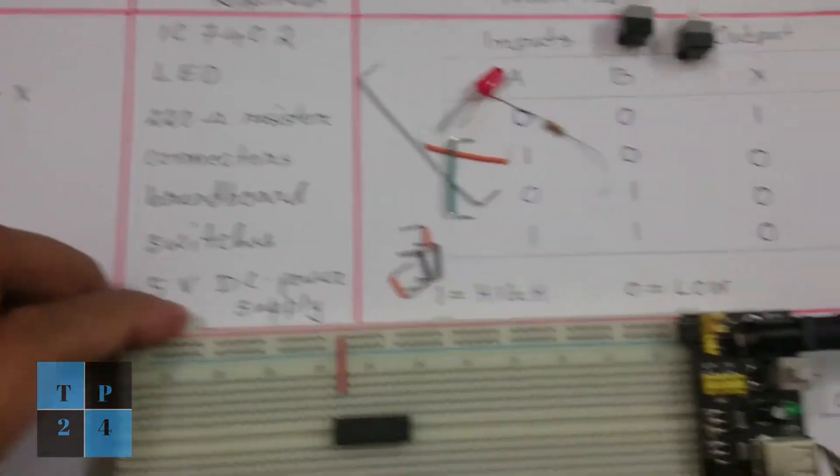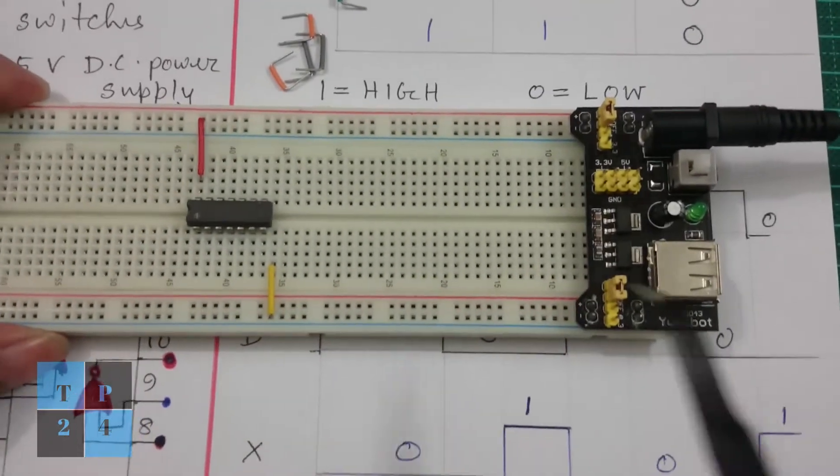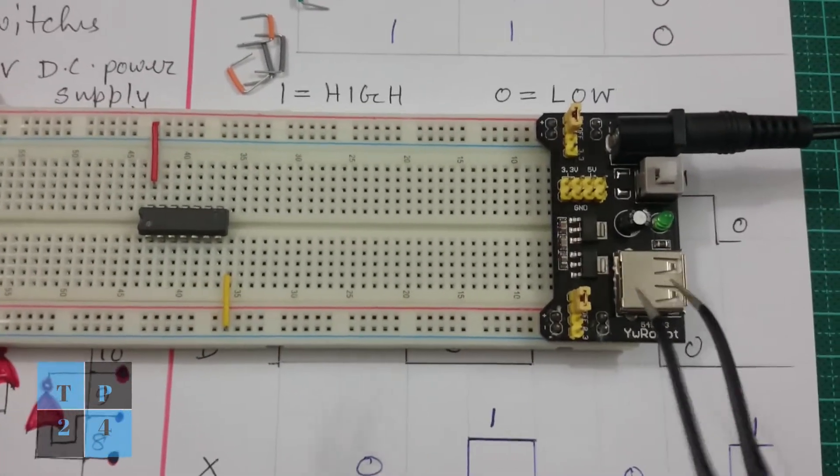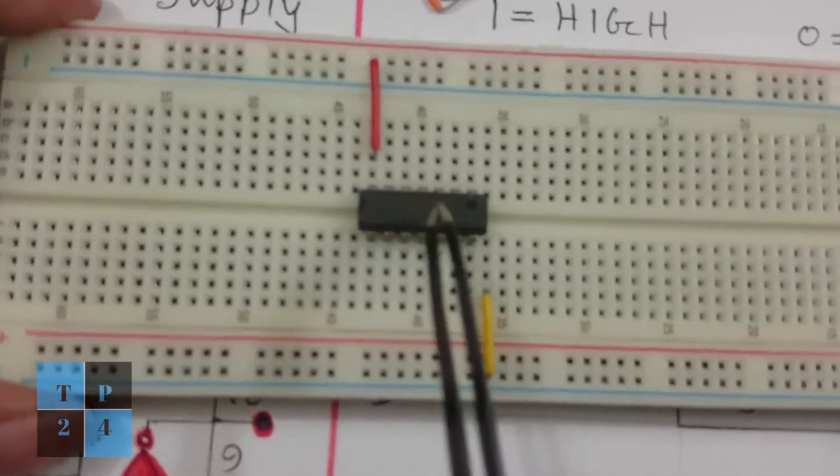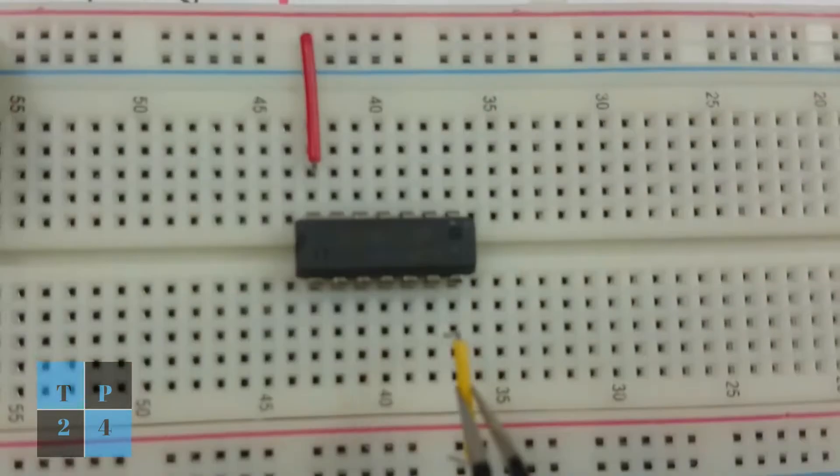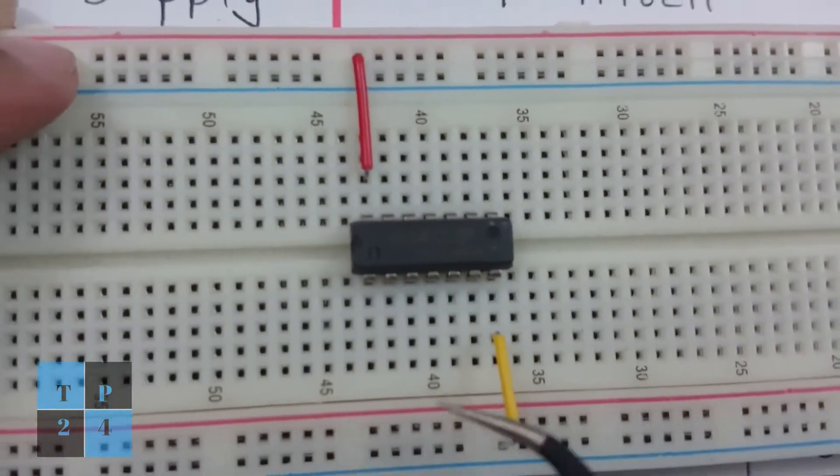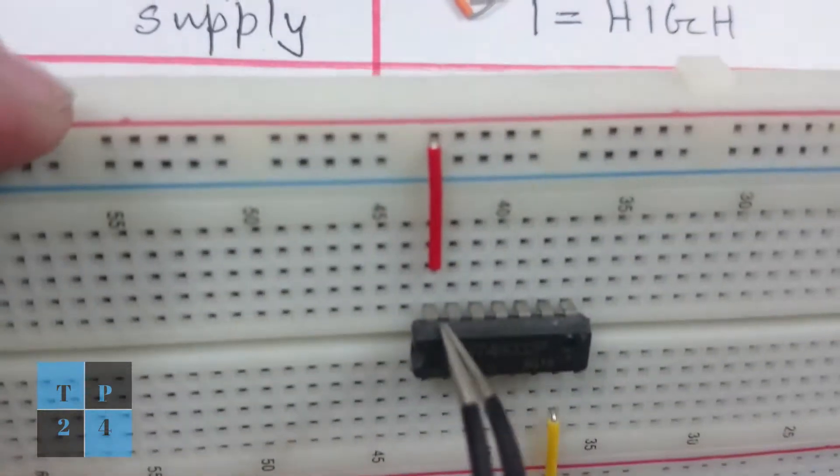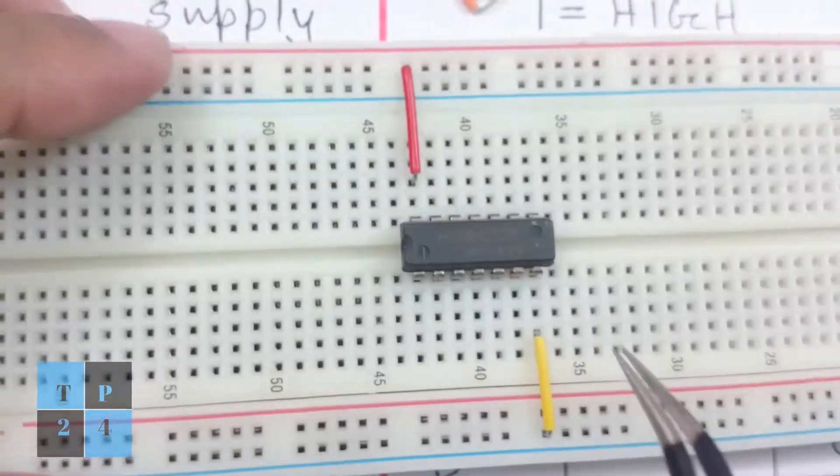This is my 5 volt DC power supply that I used in my previous tutorials for logic gates, and this is the IC 7402. I connected pin number 7 to ground and pin number 14 to the positive rail of the breadboard.